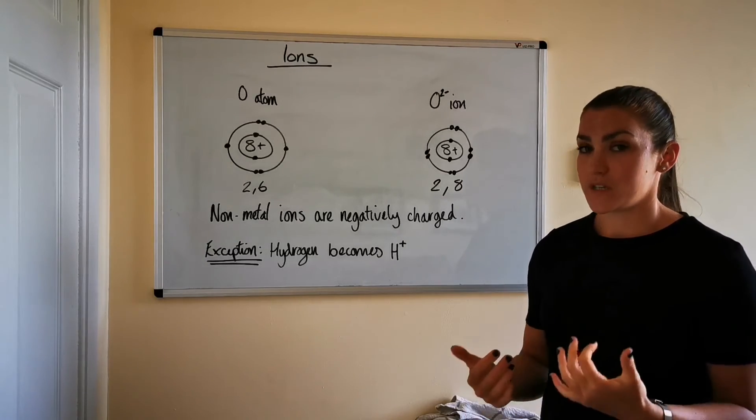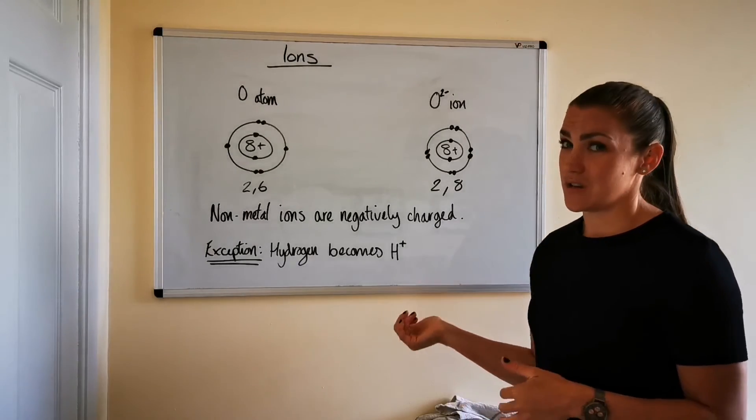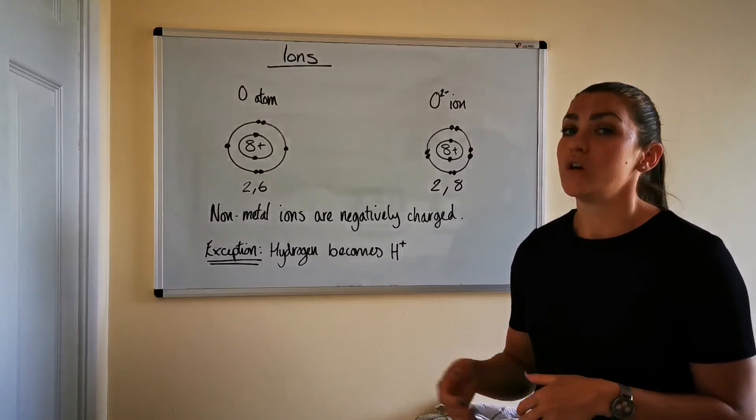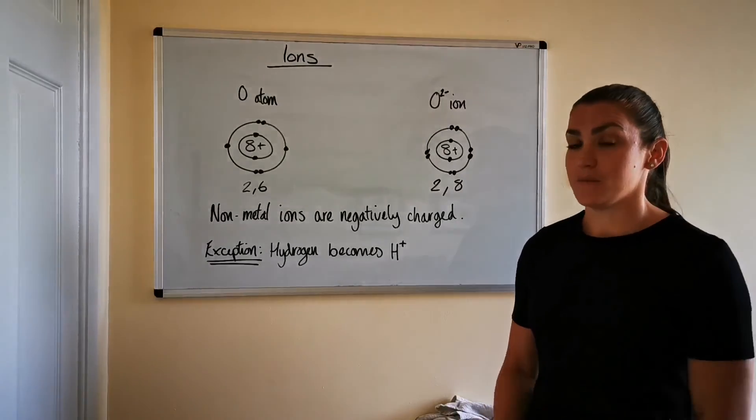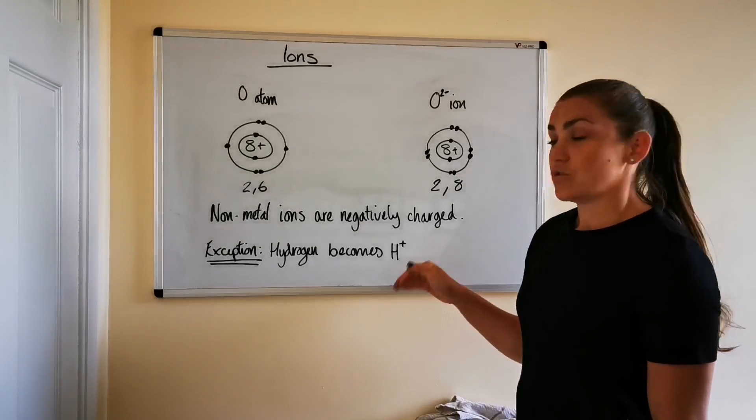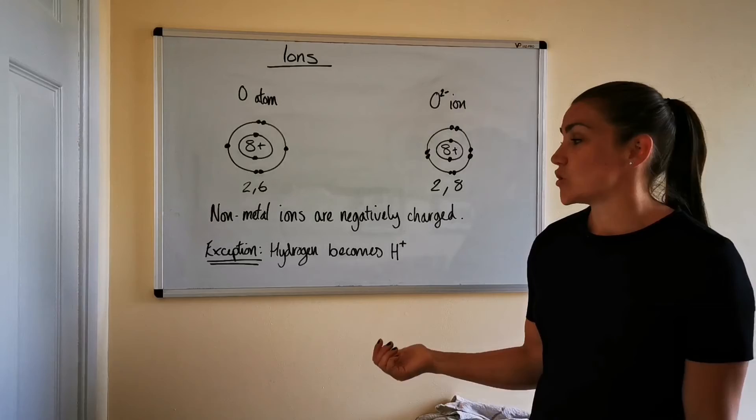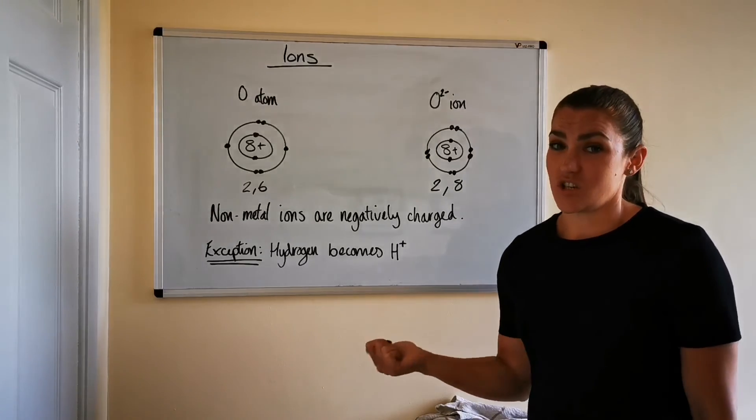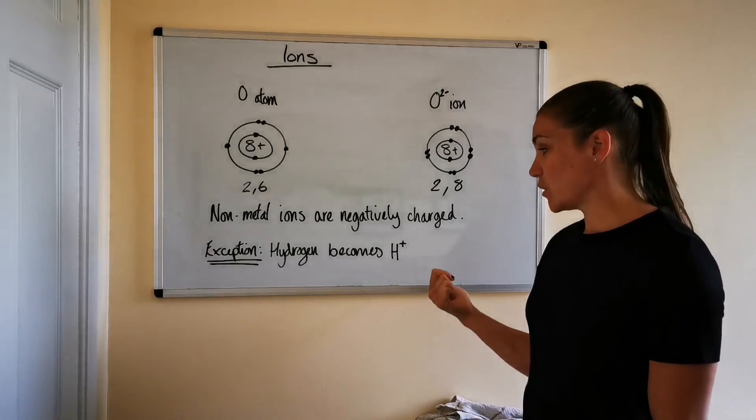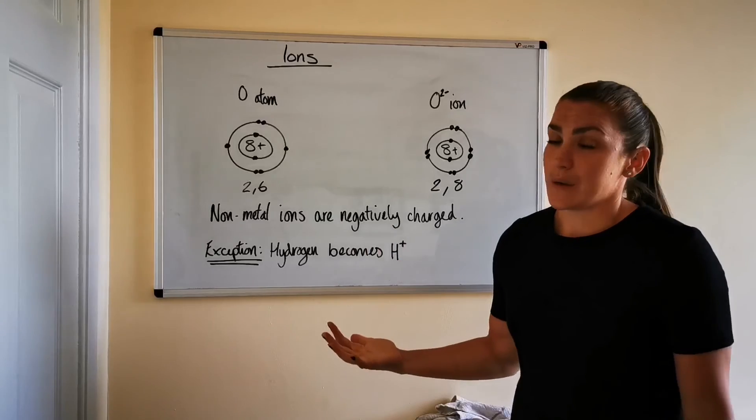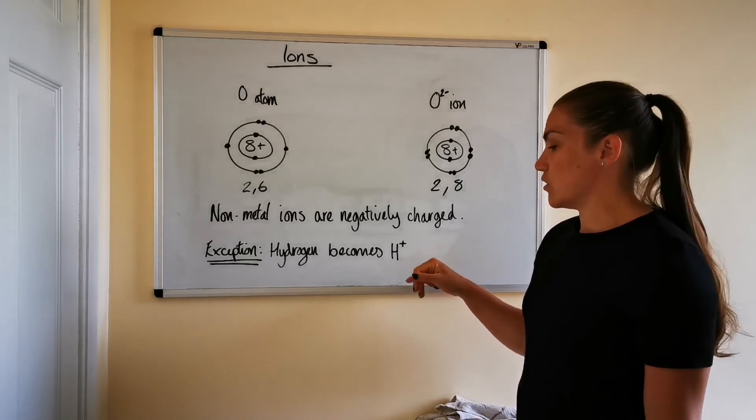So like the rest of the alkali metals in group one they all lose one electron to become an ion to form a stable species and hydrogen as well a hydrogen atom will also lose its one outer electron to become a stable species. Hydrogen only has one electron so once it's lost that it actually doesn't have any electrons anymore so a hydrogen ion is essentially just a nucleus with one proton and however many neutrons in it the number of neutrons depends on what isotope you've got.